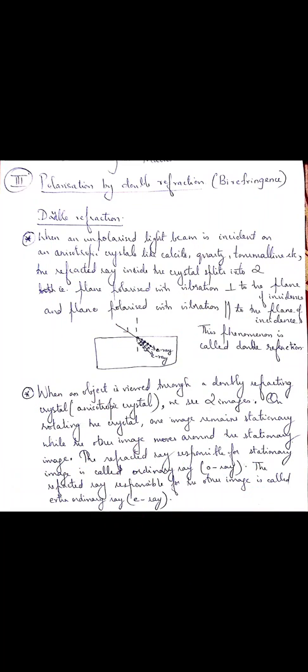That is the third point of difference: the refractive index of the crystal for the ordinary ray is a constant, whereas the refractive index of the crystal for the extraordinary ray is different in different directions. The fourth point of difference is that the O ray obeys Snell's law, whereas the E ray does not obey Snell's law. So, to summarize: both O and E rays are plane polarized; the ordinary ray has the same velocity in all directions while the E ray has different velocities; mu O is constant while mu E varies; and the O ray obeys Snell's law while the E ray does not.